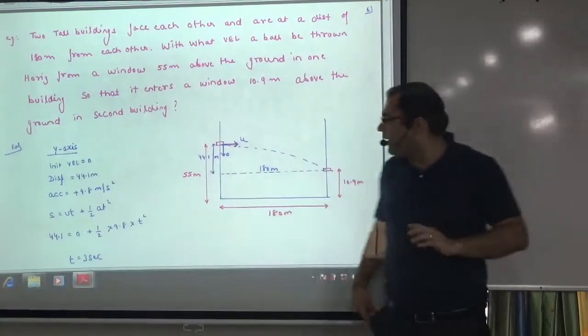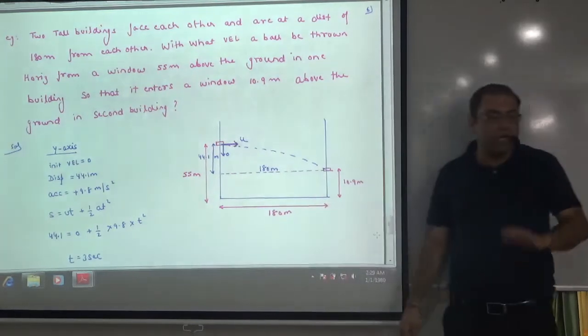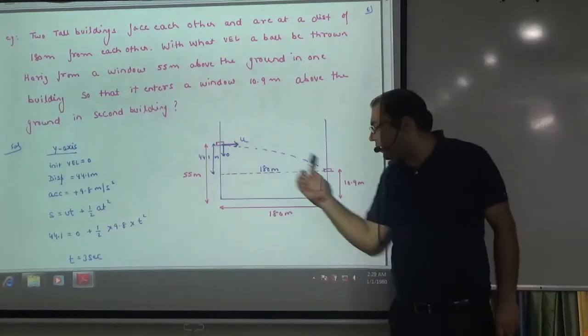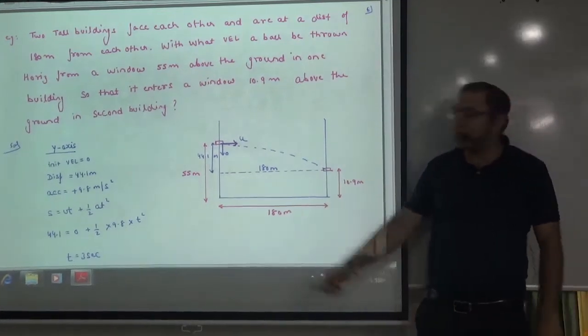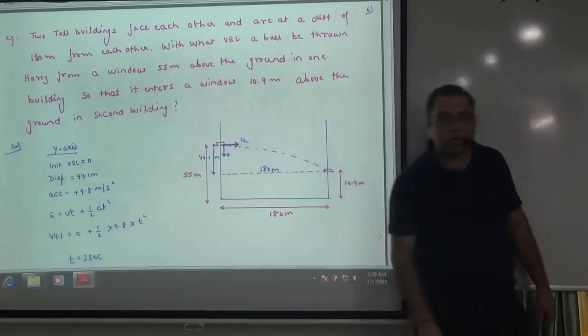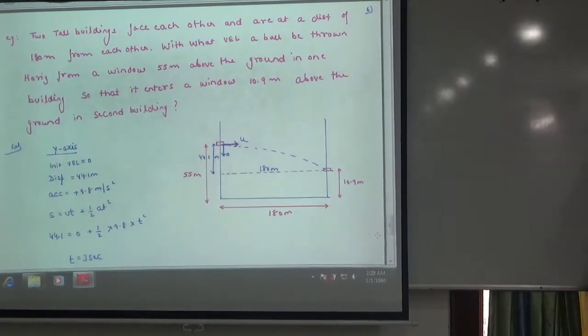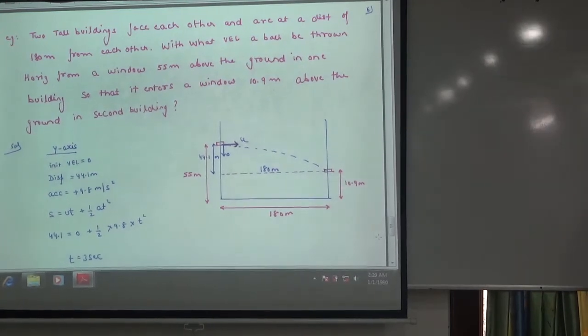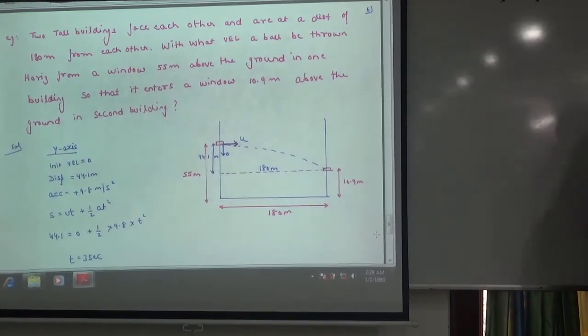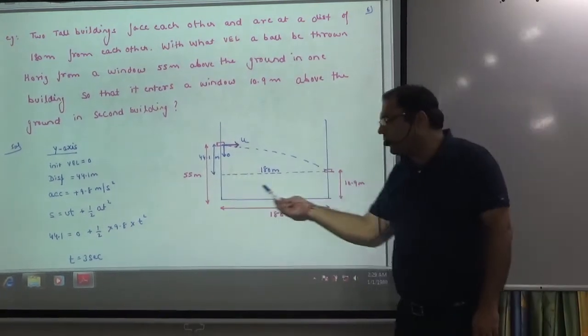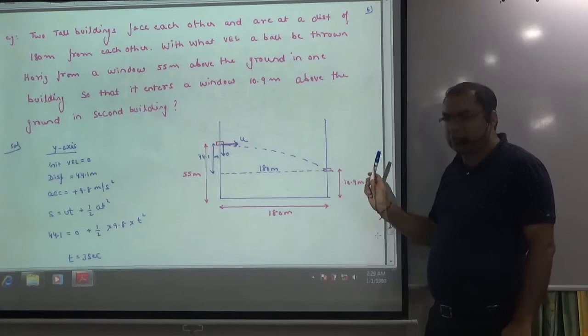So one window is at a height of 55 meters and one window is at a height of 10.9 meters above the ground. So from here there is a ball, and it goes from this window to this window. So tell us what will be velocity U. This is the question. So we have to solve for U. Now what do we need to take down this? What is our question here?